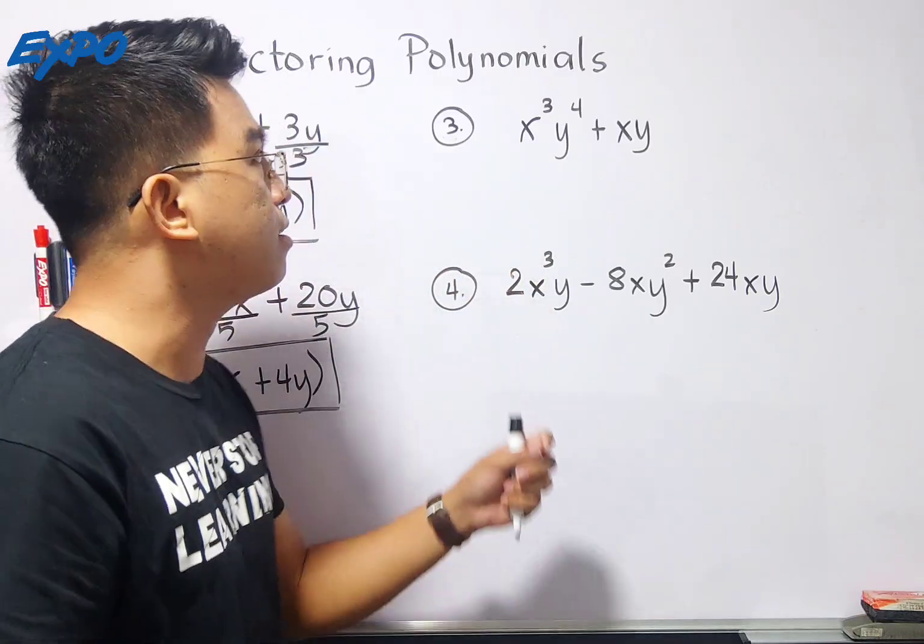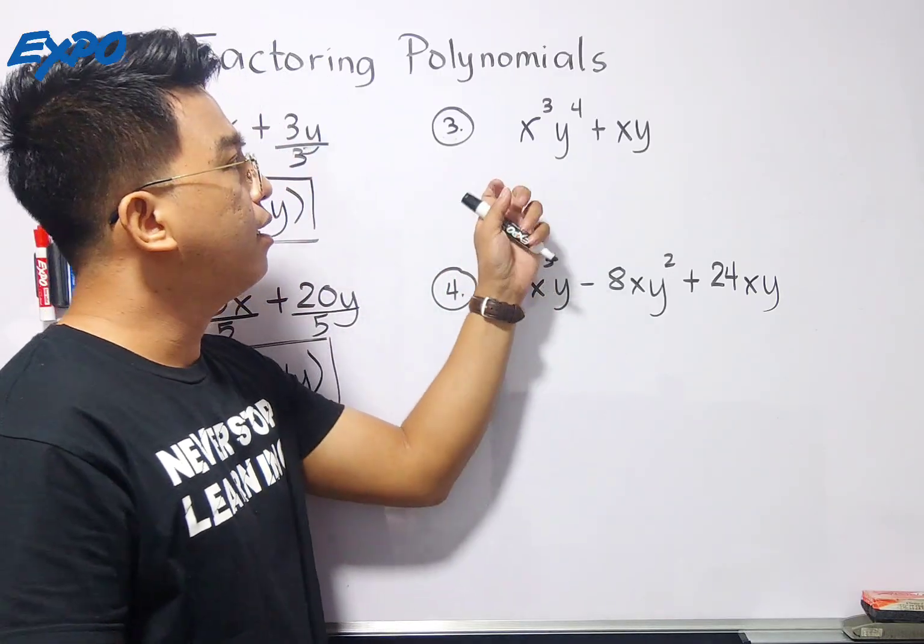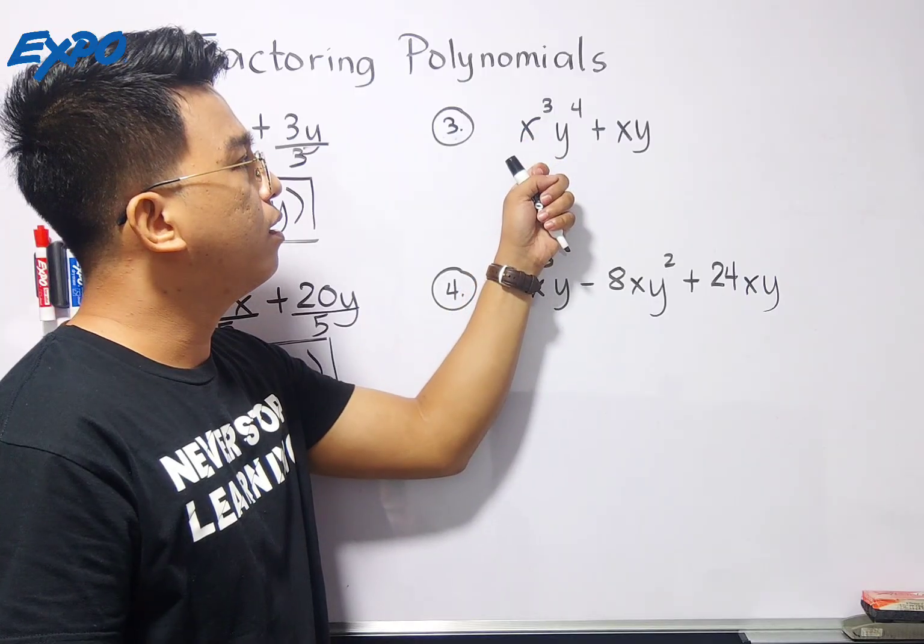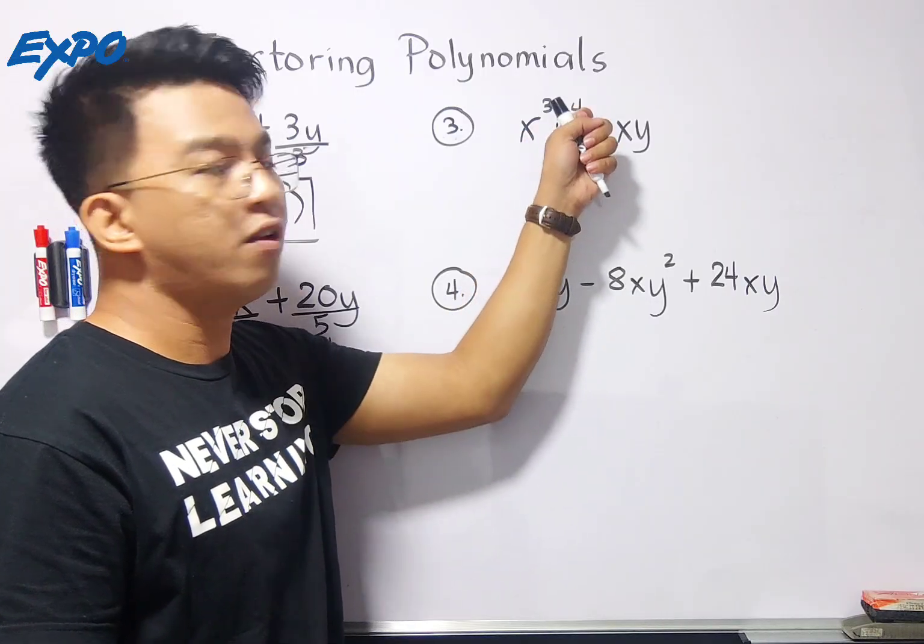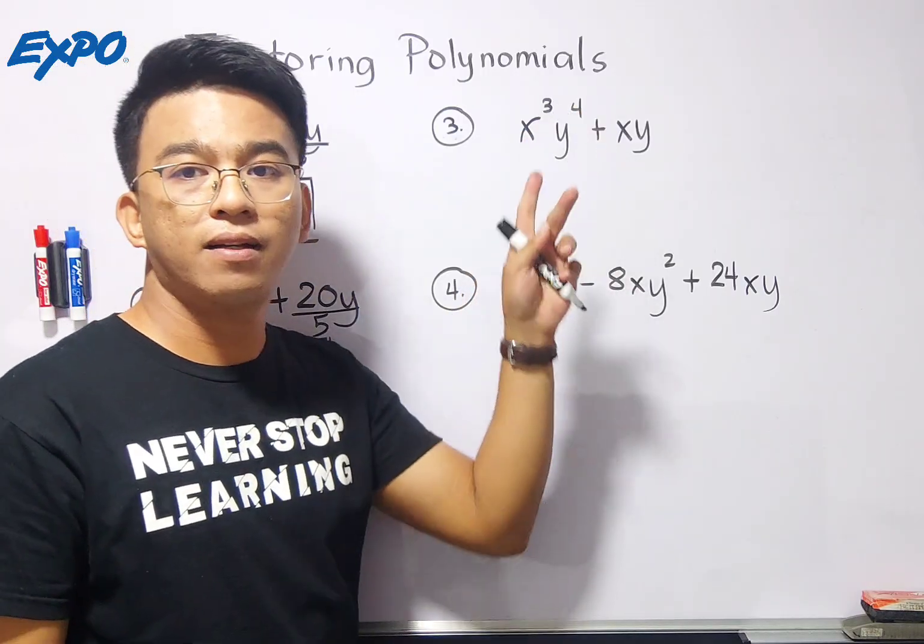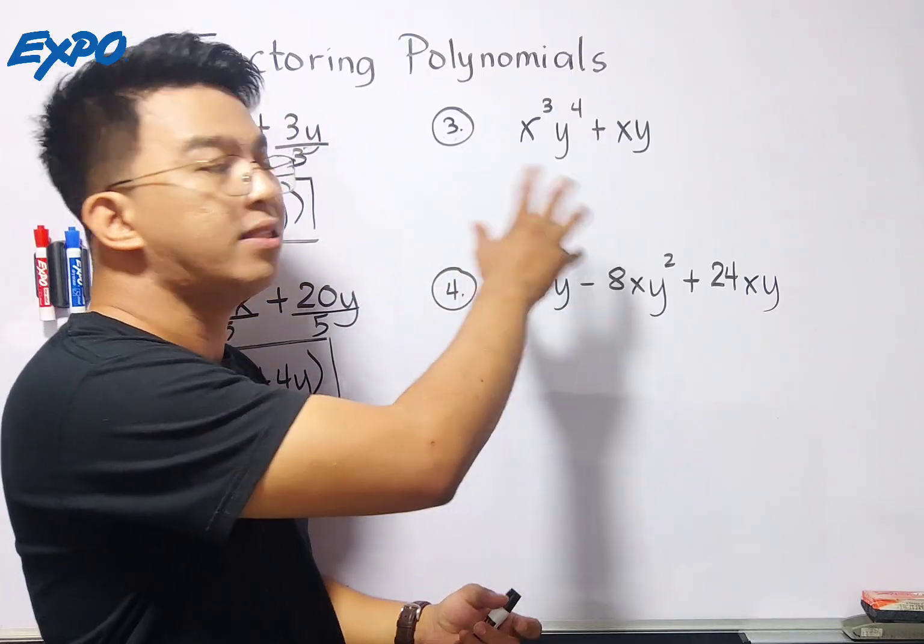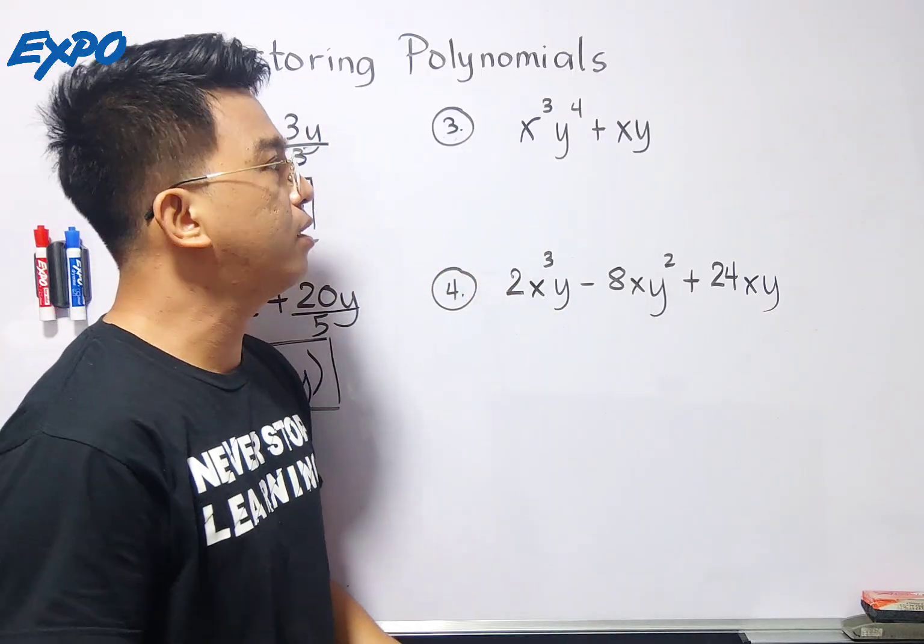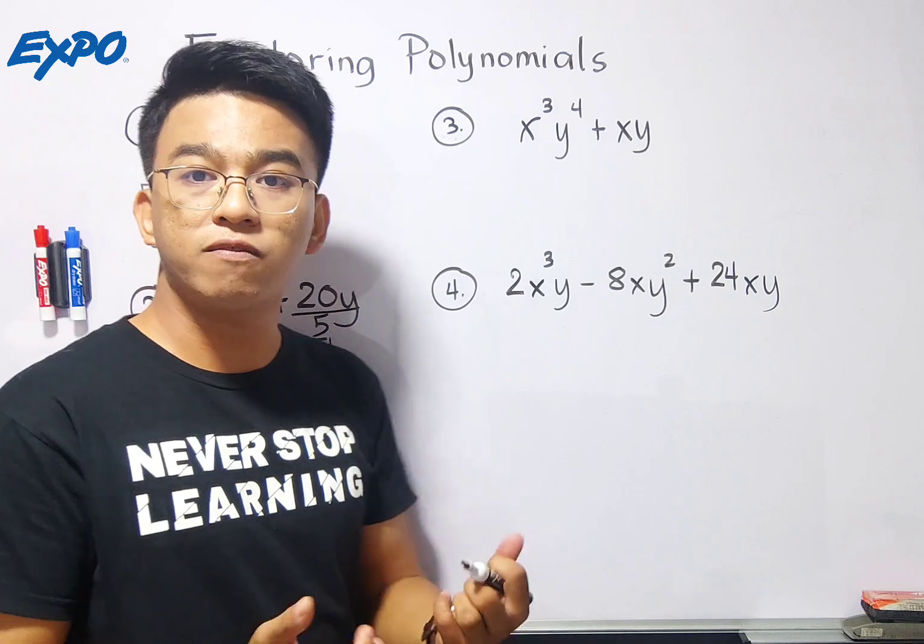So I hope guys, that in the first and second examples, you've learned the way or ways on how to factor out a given polynomial. So let's move on with item number 3. In number 3, don't be confused guys because there's a lot of exponents here. We have x cubed y to the 4th power plus xy. Now, the technique here, since they don't have coefficients or numbers,